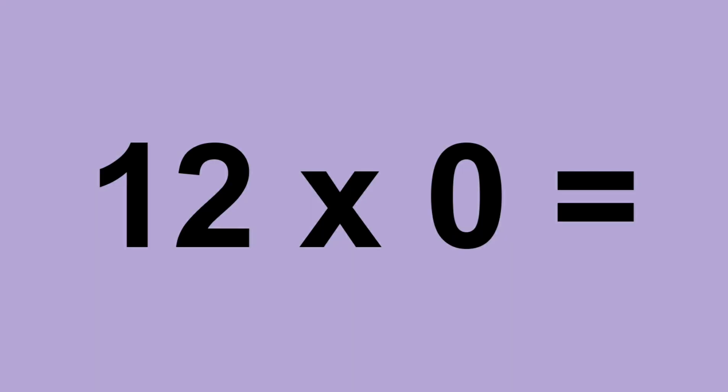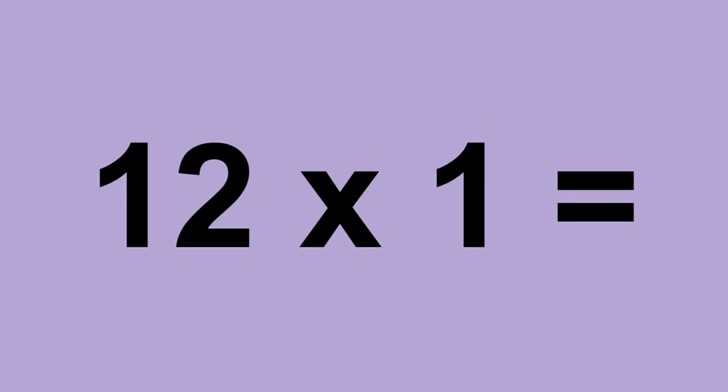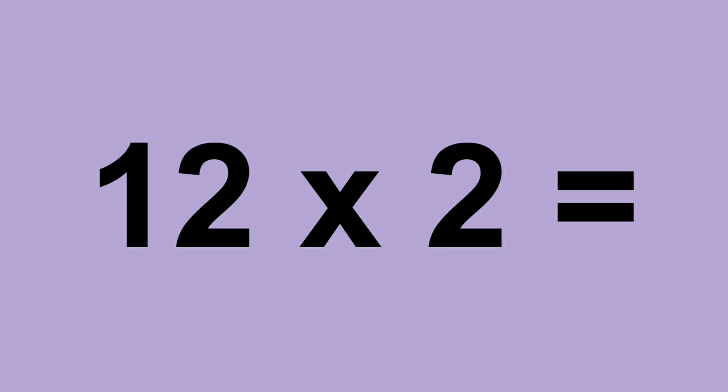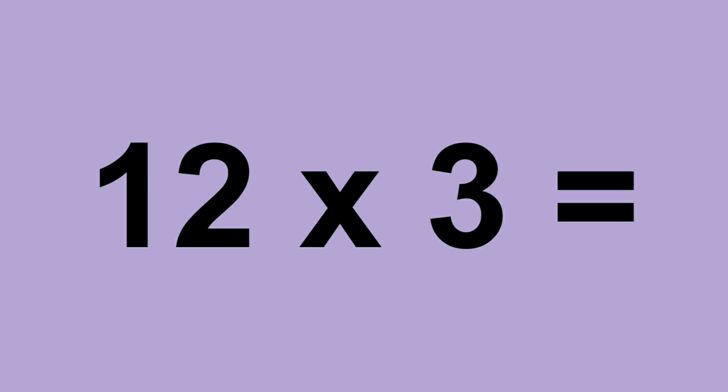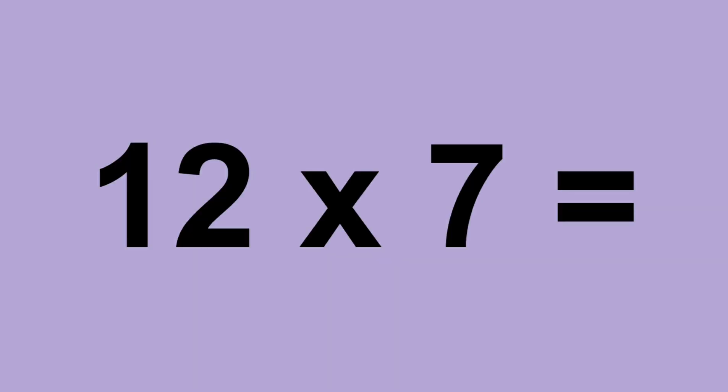Twelve times zero equals zero. Twelve times one equals twelve. Twelve times two equals twenty-four. Twelve times three equals thirty-six. Twelve times four equals forty-eight. Twelve times five equals sixty. Twelve times six equals seventy-two. Twelve times seven equals eighty-four.